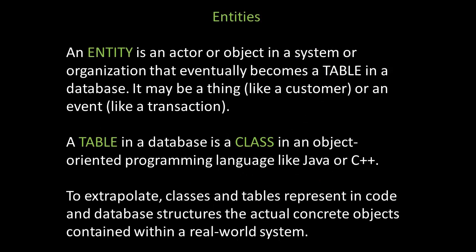An entity is an actor or object in a system or organization that eventually becomes a table in a database. It may be a thing, like a customer, or an event, like a transaction. A table in a database is like a class in an object-oriented programming language like Java or C++. Classes and tables represent in code and database structures the actual concrete objects contained within a real-world system.